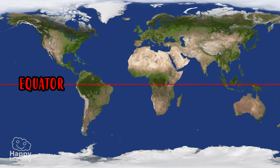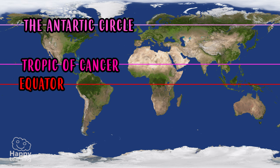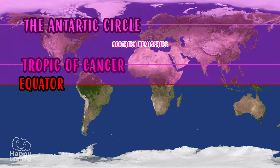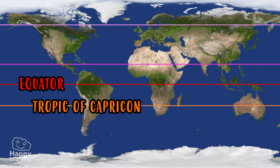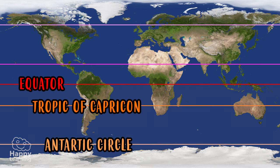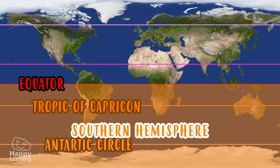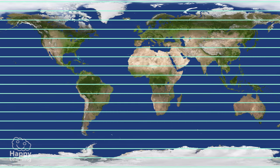Other important parallels are the Tropic of Cancer and the Arctic Circle, which are in the Northern Hemisphere, and the Tropic of Capricorn and the Antarctic Circle, which are in the Southern Hemisphere. But as you can see, there are many more lines.